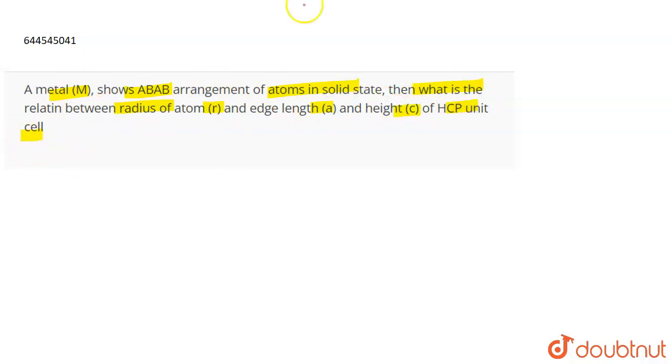Even if they would have not given you HCP unit cell by the arrangement, you could have recognized that this is about the HCP unit cell. So you have to establish a relationship between the radius R, edge length A and height C in an HCP unit cell.